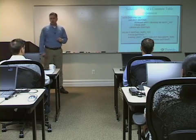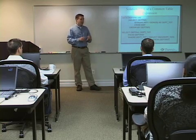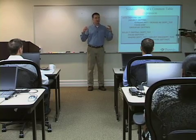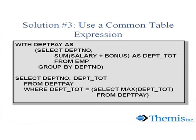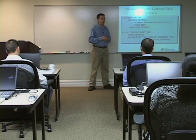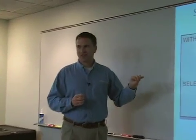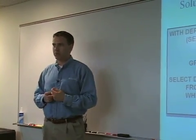The third solution, using a common table expression, is first of all simpler to code, and secondly it will probably perform better because it only builds that first layer of summarization once. It builds the CTE in memory — I'm calling it "dept_pay" — with one row for every department and the SUM of salary plus bonus for each department. That happens first, and it holds on to those results. In our case, that produces eight rows from our sample data.